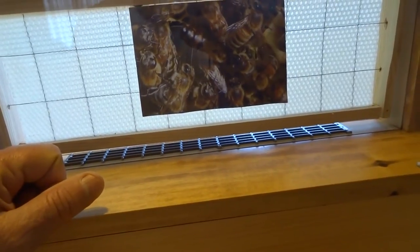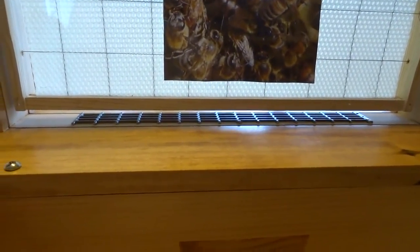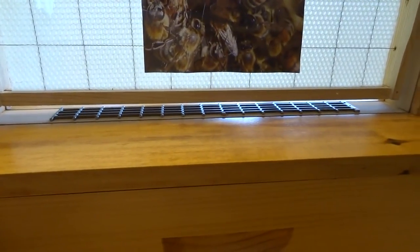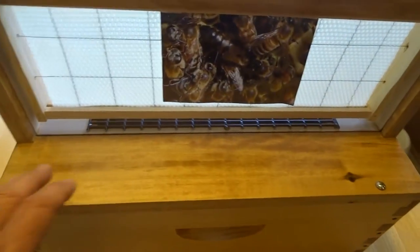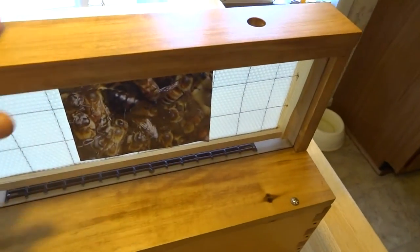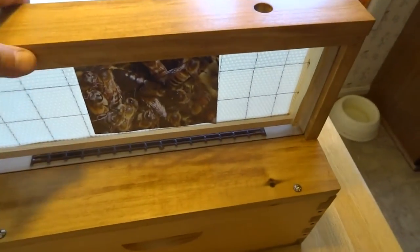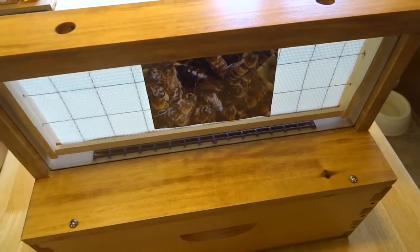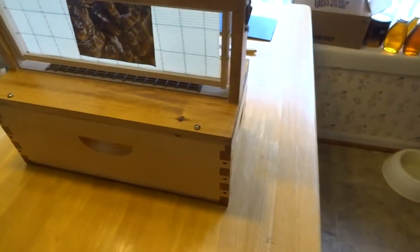The top portion is made out of tulip poplar from a tree that I harvested that was a storm-damaged tree. Tulip poplar is kind of dense, much denser than pine, much harder than pine. We finished it with a light-colored stain and three coats of polyurethane satin finish.